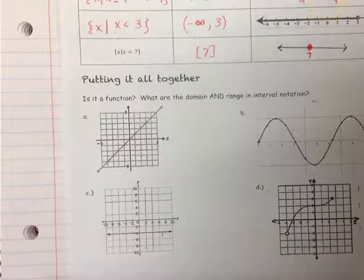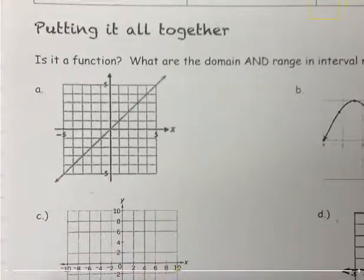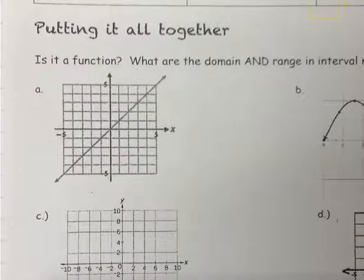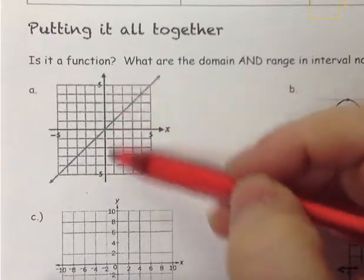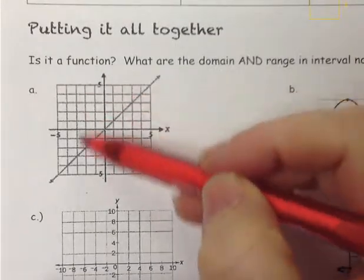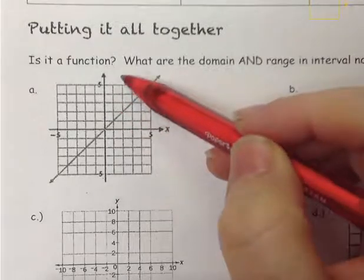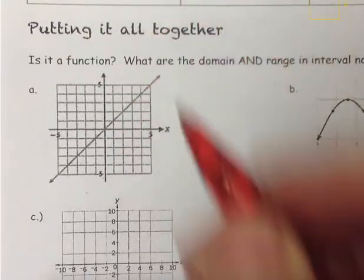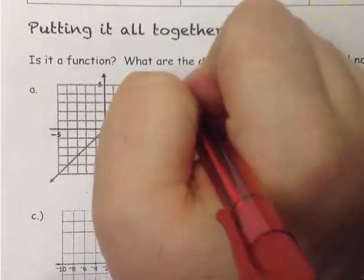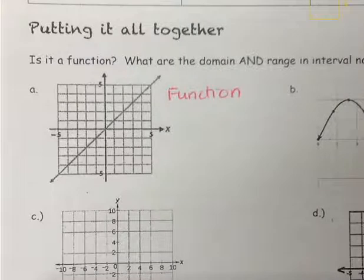Our first example is a graph, so we're going to determine if it is a function. Remember, to determine if a graph is a function, we look for the vertical line test. Any vertical line that we were to graph on here would only touch this graph one time — it would only cross it once. That means this is a function because it passes the vertical line test.